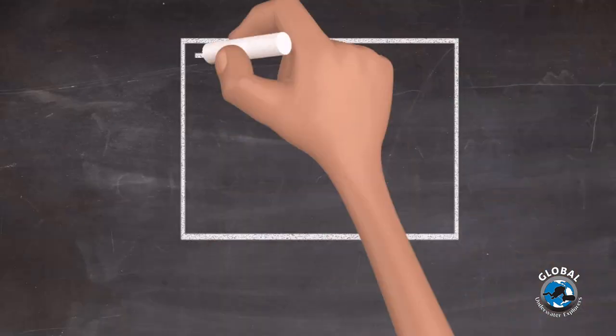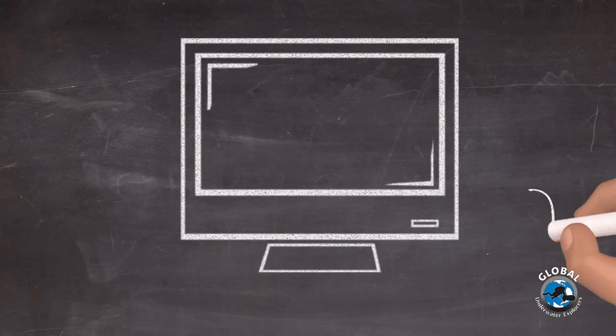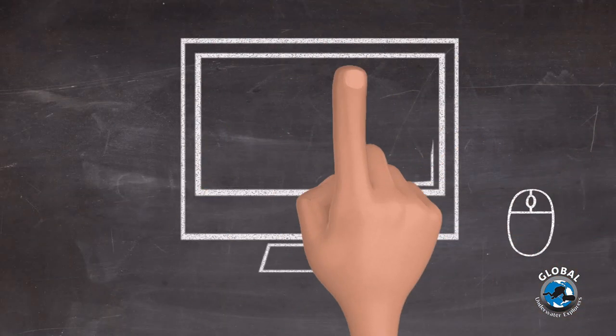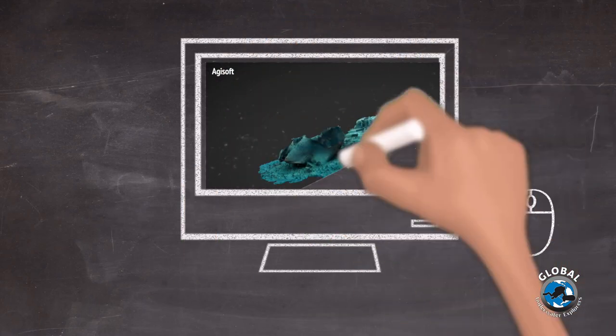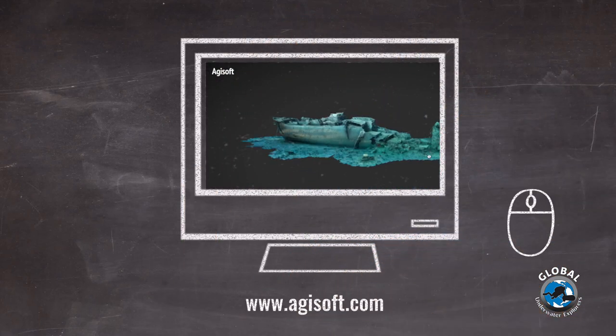The GUE photogrammetry class is open to anybody with a recreational pass of Fundamentals. You don't need to be a technical diver, an expert photographer, or a computer scientist to get away with it. You can take the images using anything from a simple action camera all the way up to an expensive SLR, and we can use a relatively inexpensive piece of software to take the imagery we capture and make it into a digital 3D model.